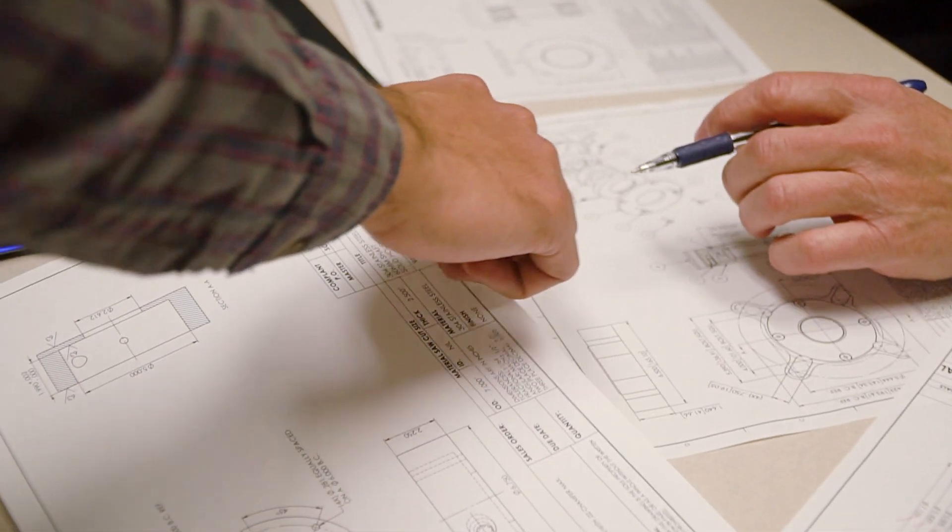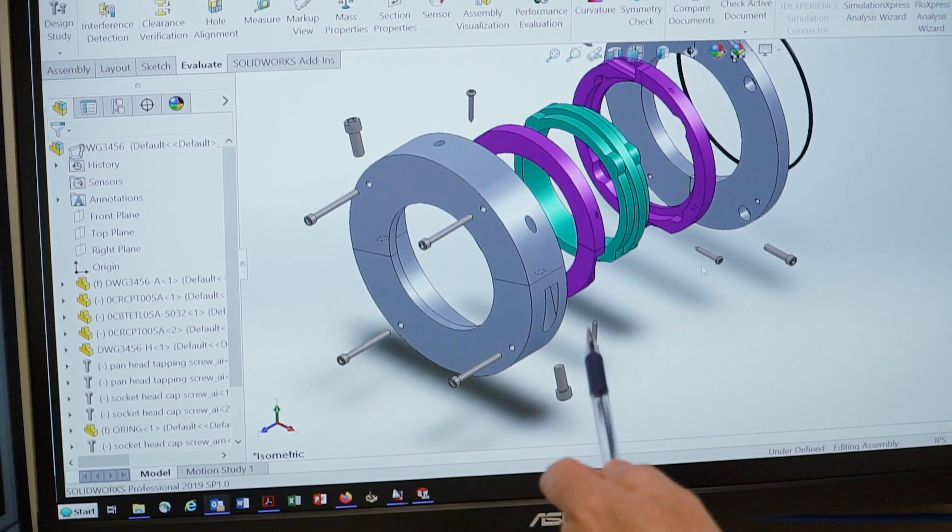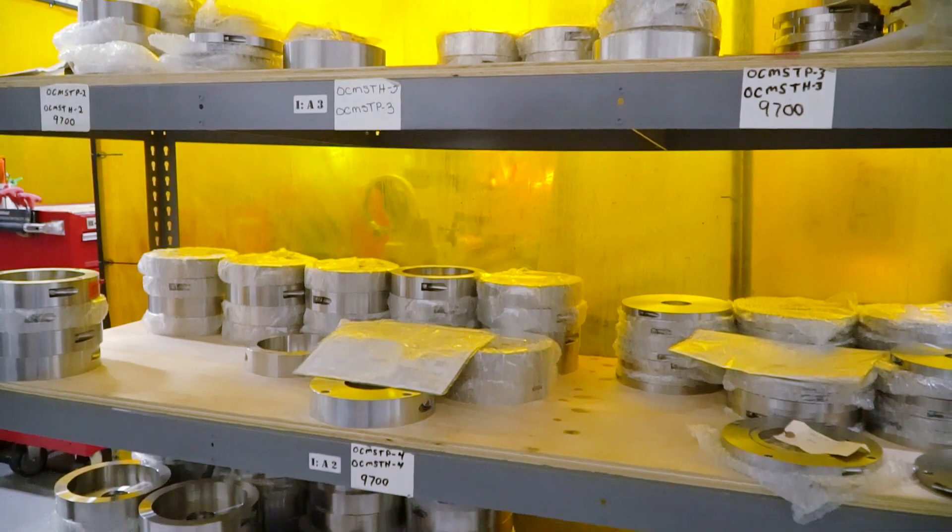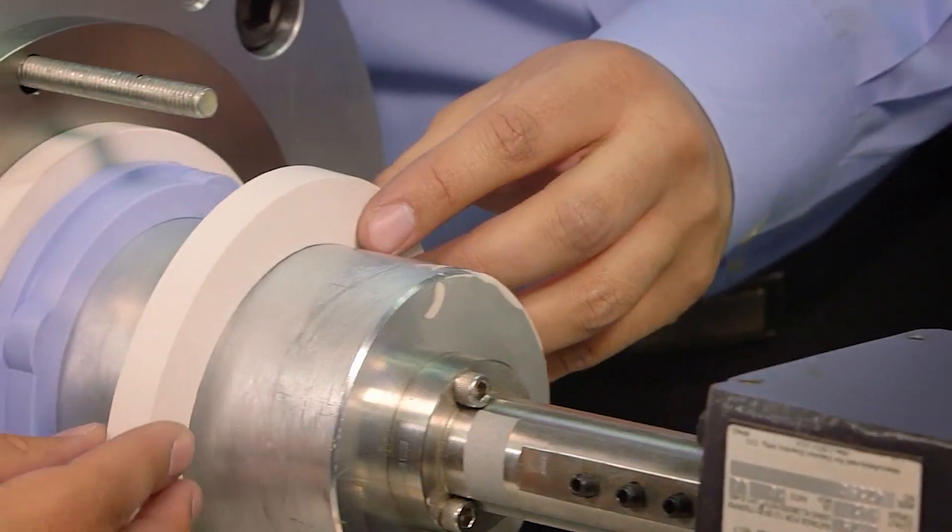These seals can damage the rotating shaft and can take very little shaft run out before allowing product to leak past. Unlike Cinch Seal, these inferior seals eventually lead to costly shaft replacements.